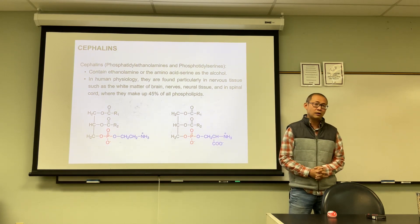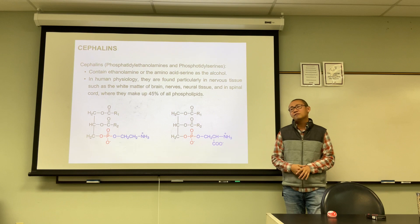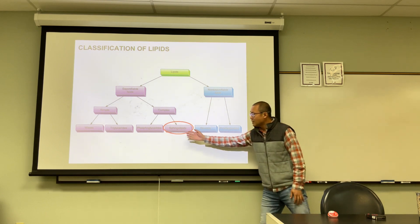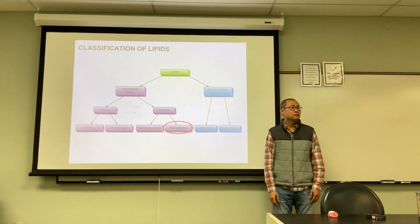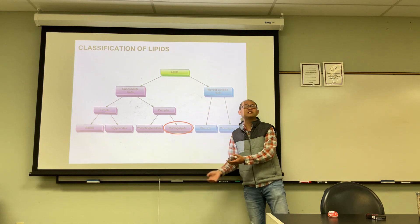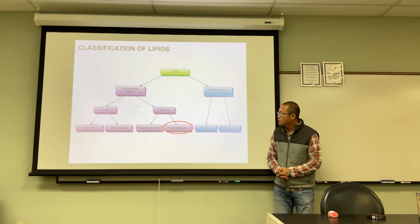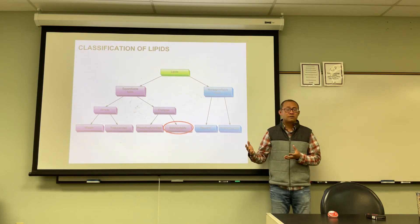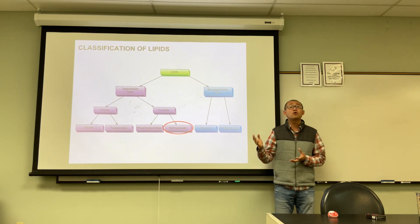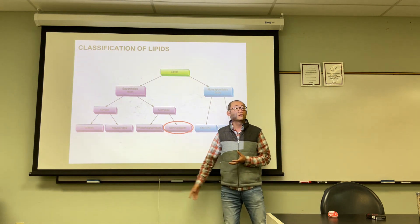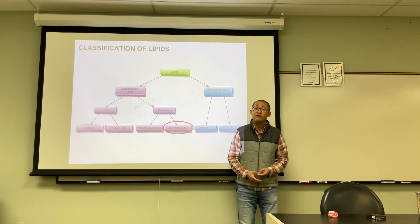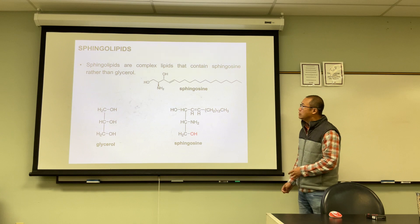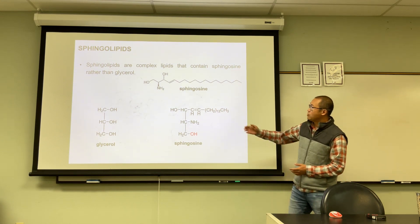Cephalins are mainly found in our neural systems — the white matter of the brain, neural tissue, and spinal cord. These are very abundant lipids in our neural systems. Now let's move on to the last type of complex lipid, also called the last type of saponifiable lipid: sphingolipids.